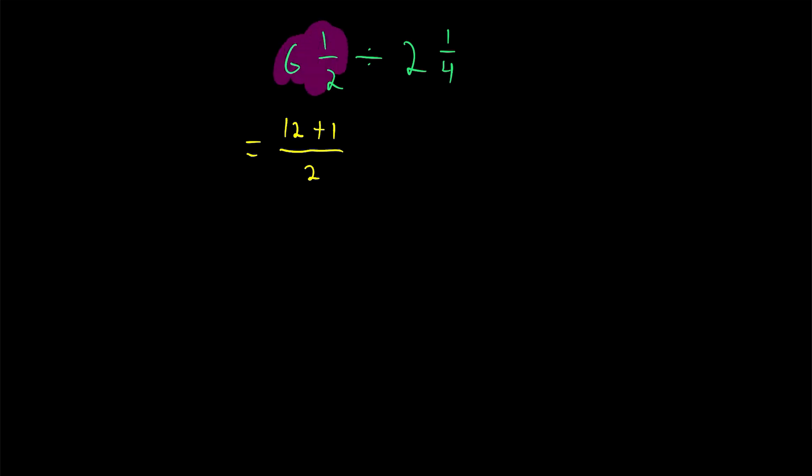Remember, in order to turn a mixed number into an improper fraction, all we need to do is multiply the whole part by the denominator—that's 6 times 2, which gave us our 12—and then add the numerator of the fractional part. Then divide that sum by the denominator of our fraction.